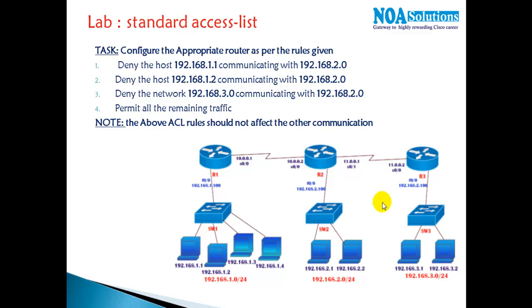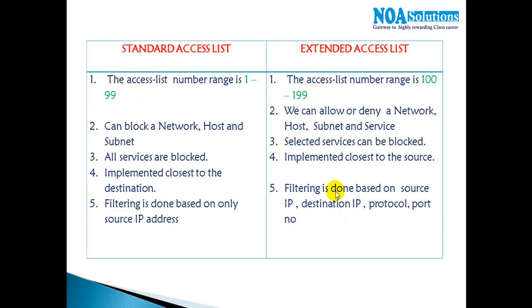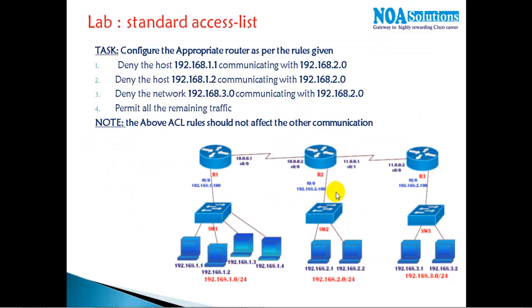In this section we'll see the basic implementation of standard ACLs, how they are configured and how they work. For the lab implementation I'm going to use the same topology discussed in our basic routing concepts, connecting the 192.168.1, 2, and 3 networks.